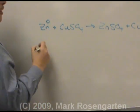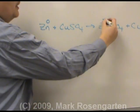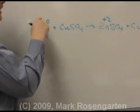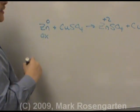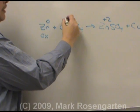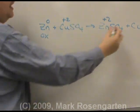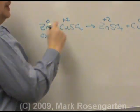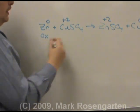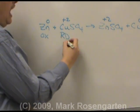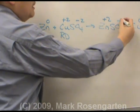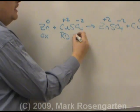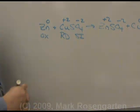Zinc started off with a charge of zero and ended up as plus two — it was oxidized as it lost both its valence electrons. The copper started as plus two and ended as zero; its charge went down as copper gained two valence electrons. The sulfate remained minus two on both sides, making it a spectator ion.